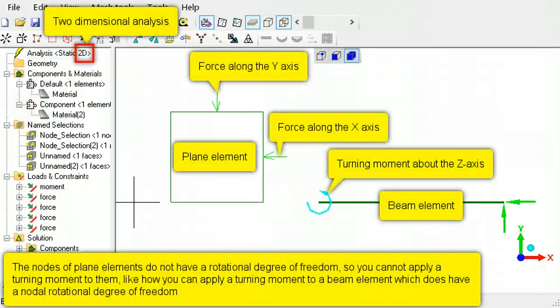In two-dimensional analysis, a force can be applied along the x and y axis directions. In two-dimensional beam elements, a turning moment may be applied about the z-axis.